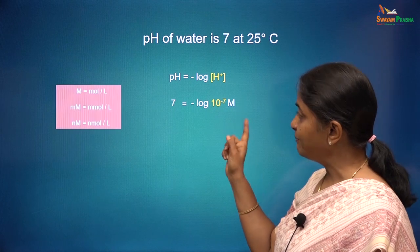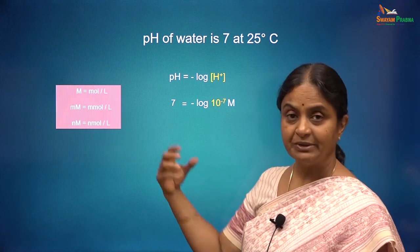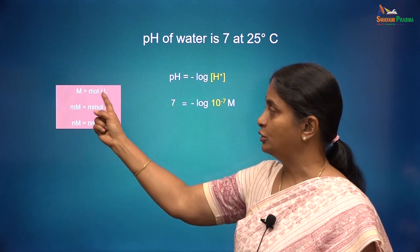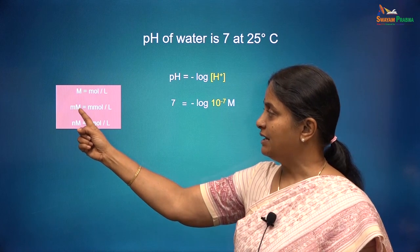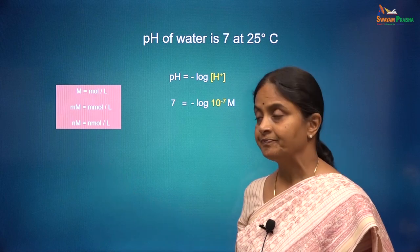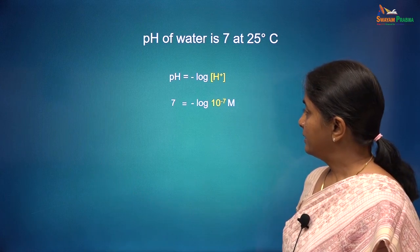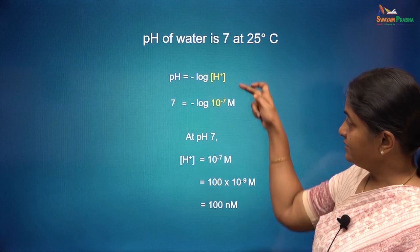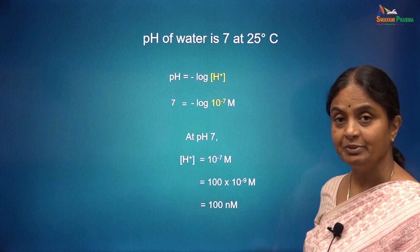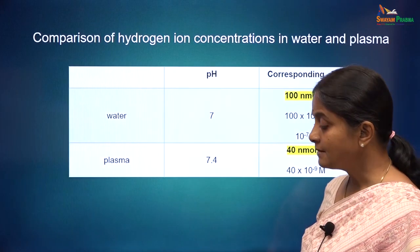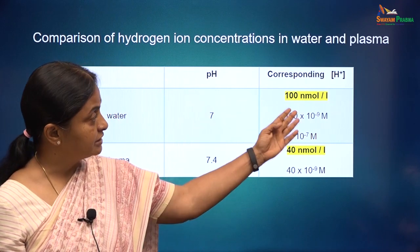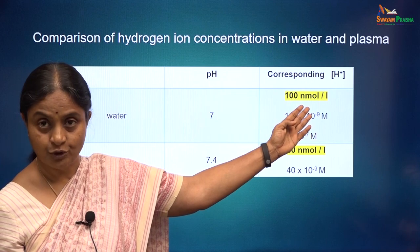When I say capital M, what is meant is moles per liter — it is referred to as molar. Millimolar means millimoles per liter; this is nanomolar. For a pH of 7, the hydrogen ion concentration in solution has to be 100 nanomoles per liter.